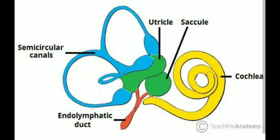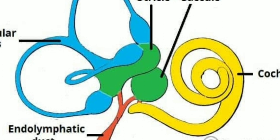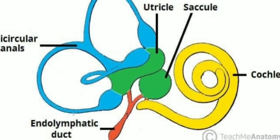The membranous labyrinth consists of the following ducts, made up of connective tissue membranes. Within the cochlea, we have a two-and-a-half turn tube called the cochlear duct. Within this duct runs a liquid called endolymph, which is an ultrafiltrate of plasma.